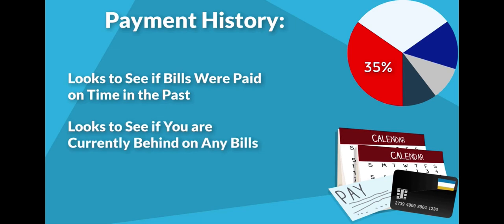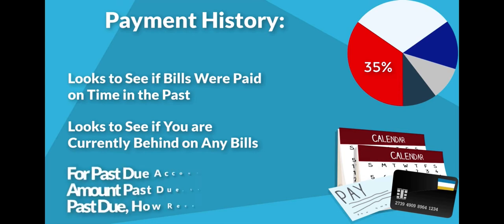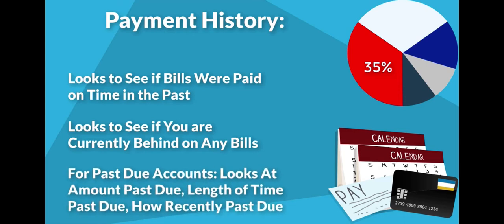The score will calculate the total number of accounts paid on time and the number of accounts past due, with past due accounts being rated by the amount past due, the length of time past due, and how recently it was past due. In some instances, certain late payments can have more of a negative effect than others.